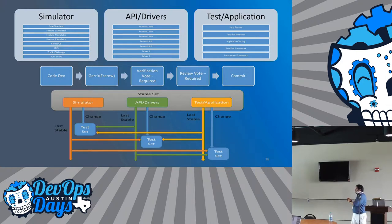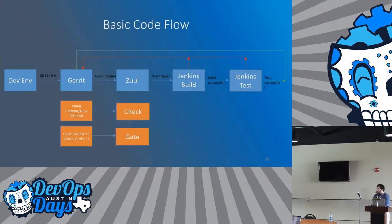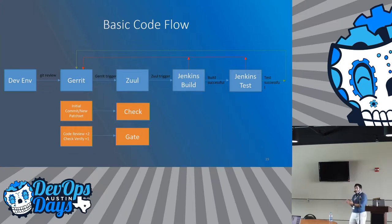The entire problem is: you have three sets of builds available to you, you need to take them through verification and voting and code review voting, and then test the changes with the last stable set for the other two components.